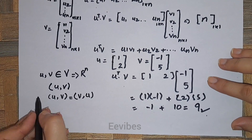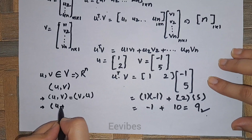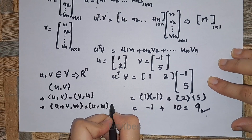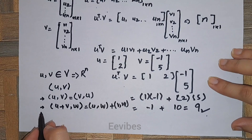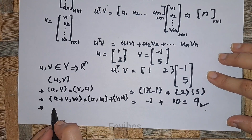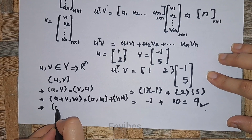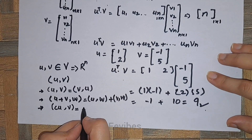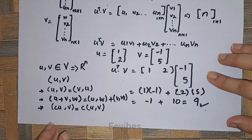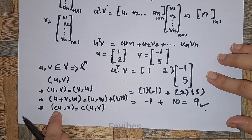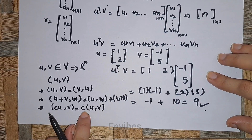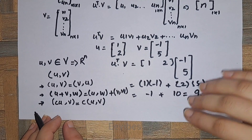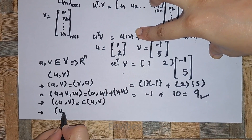The second axiom is: ⟨u + v, w⟩ = ⟨u, w⟩ + ⟨v, w⟩ for any third vector w. The third axiom is the scalar multiplicative property: if you multiply the first vector by a constant c, then ⟨cu, v⟩ = c·⟨u, v⟩, because scaling one vector scales the dot product by the same constant factor c.